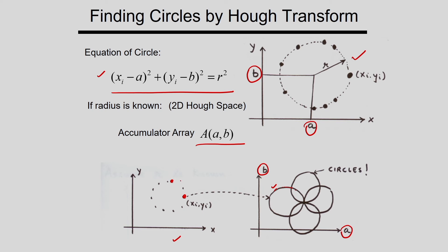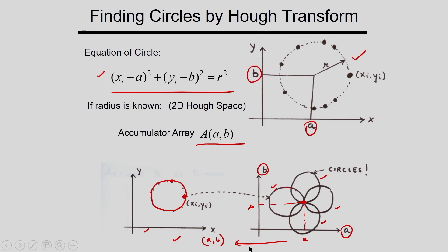Corresponding to each additional circle-edge point, I get another circle in the parametric space. All these circles intersect at a single point, which gives the a and b values of the detected circle. I count the number of intersections using an accumulator. If the radius is not known, the accumulator has three parameters: a, b, and r.